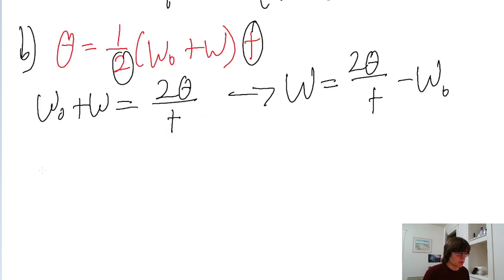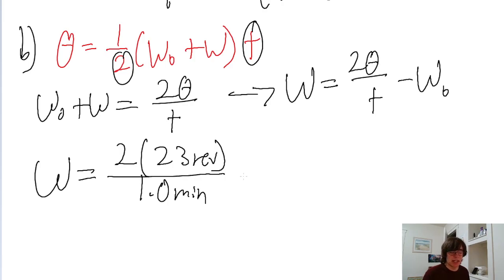Now we'll just plug in the things we know. ω equals two times the angular displacement, which is 23 revolutions, divided by the time interval, which is one minute, minus the initial angular speed, which we already established is zero.